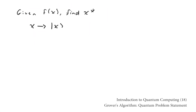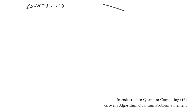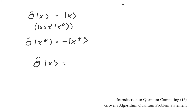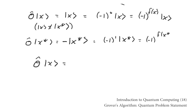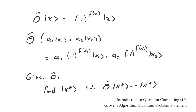The quantum version of this problem deals with vectors instead of numbers and linear transformations instead of functions. The function f becomes the linear transformation O for Oracle. O acting on any basis vector x aside from x star produces x, and O acting on x star gives negative x star. O can be concisely expressed in terms of the function f from the classical problem. The problem that Grover's algorithm solves is: given the Oracle O, find the vector x star such that O acting on x star equals negative x star. Grover's algorithm outperforms the classical algorithm by making use of the fact that a quantum system can be in a superposition of classical states.